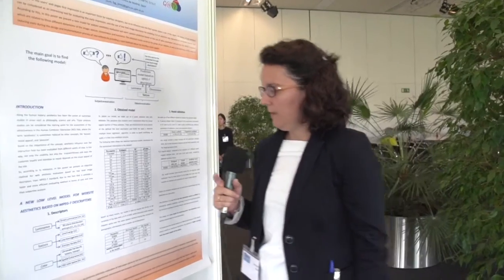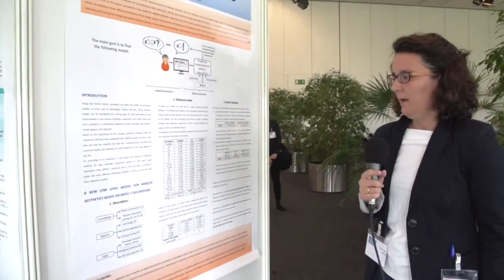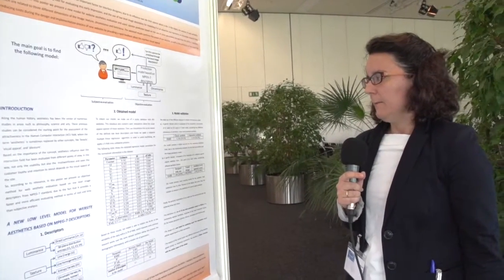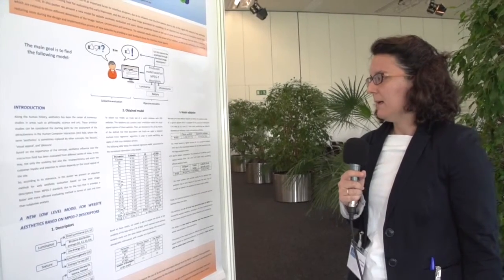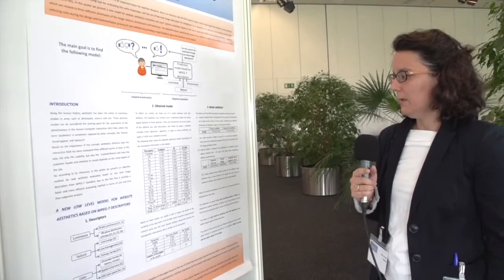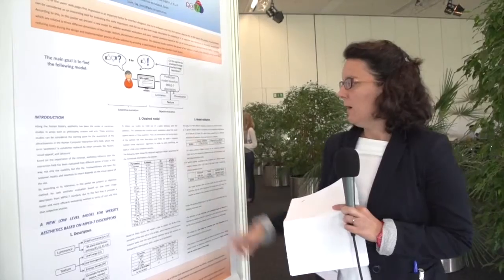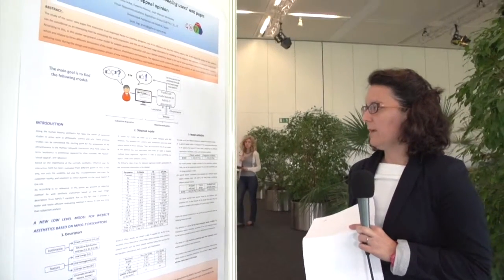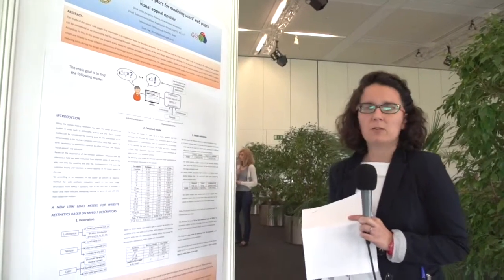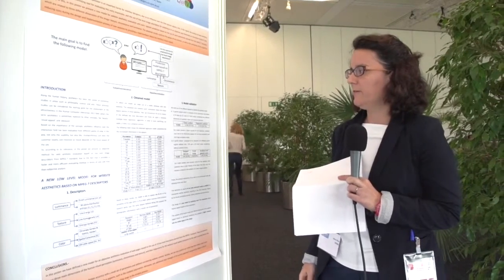First of all, we create 15 descriptors about the image and then we apply a regression model for obtaining the model, taking into account that we have a dataset of 4050 websites, and we apply a five-fold cross-validation process in order to avoid overfitting.